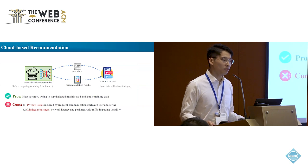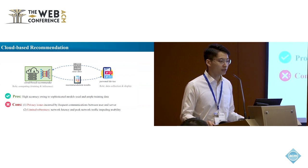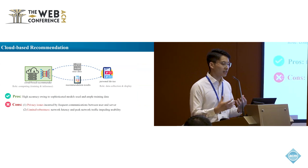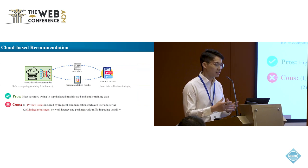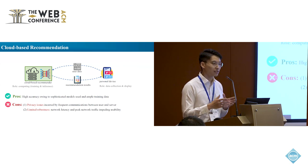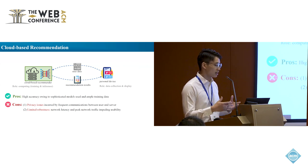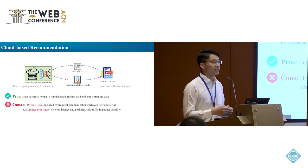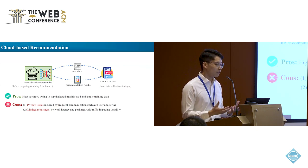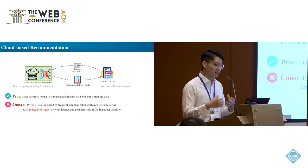For most existing work, they are cloud-based recommendation models. We have a giant and sophisticated model on the cloud, which is responsible for computing, trained on user data collected from personal devices, and outputs the recommendation list to the personal devices. Personal devices are only responsible for data collection and display. There are pros, such as high accuracy owing to the giant and sophisticated models, but also disadvantages such as privacy issues, because sensitive user data is directly uploaded to the cloud. Moreover, this system heavily relies on the network, and peak network traffic might impede usability.